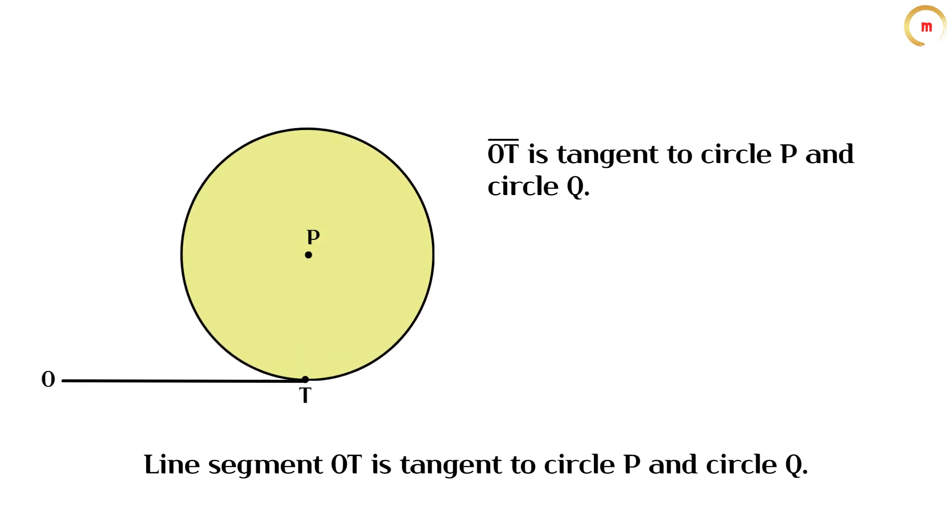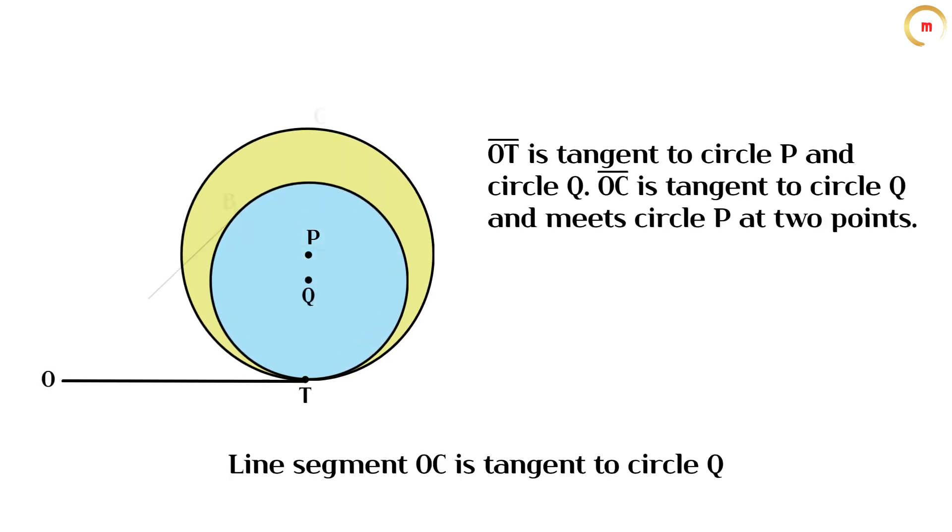Line segment OT is tangent to circle P and circle Q. Line segment OC is tangent to circle Q and meets circle P at two points.